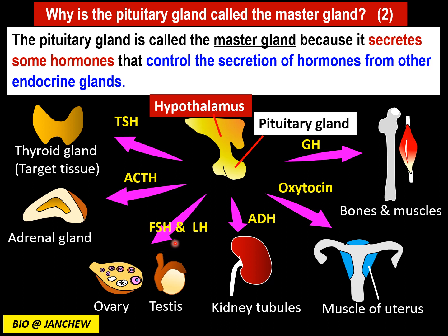We will study the functions of these hormones in the next few slides. ADH acts on the kidney tubules to cause the reabsorption of water into the blood. Oxytocin acts on the muscles of the uterus and causes them to contract during childbirth. The pituitary gland also secretes growth hormone, which stimulates the growth of bones and muscles and the synthesis of proteins. There is also prolactin, whose function we will study shortly.